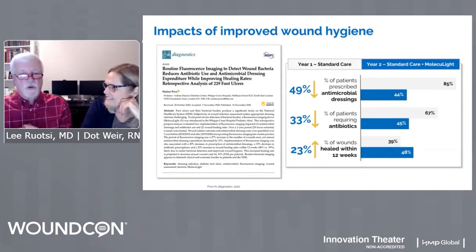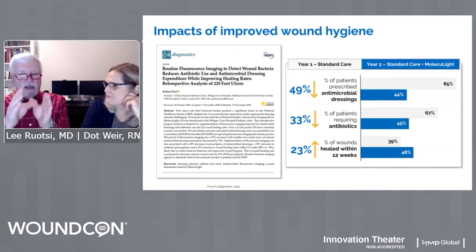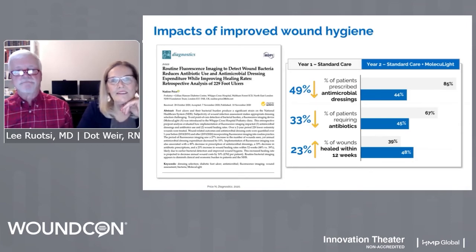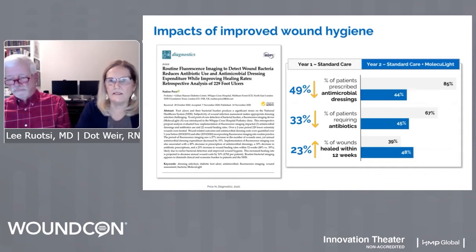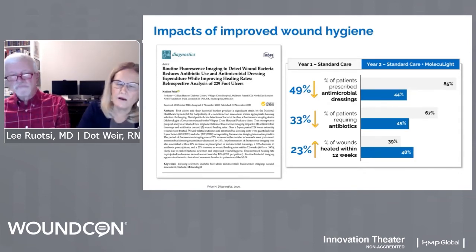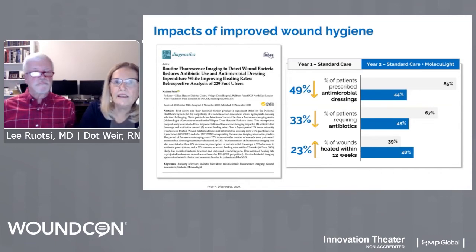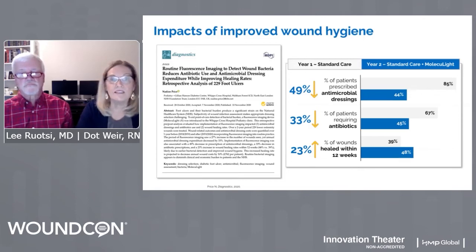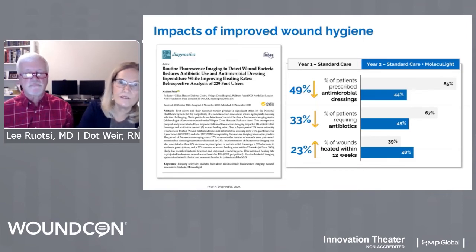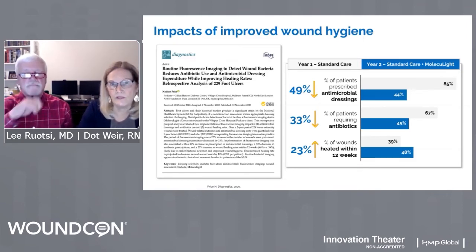This study looked at one year of standard care retrospectively, then a second year where they had the option of using the Moleculite. In that second year, they found 49% less usage of antimicrobial dressings, 33% fewer patients required antibiotics, and there was a 23% increase in wounds healed at 12 weeks.